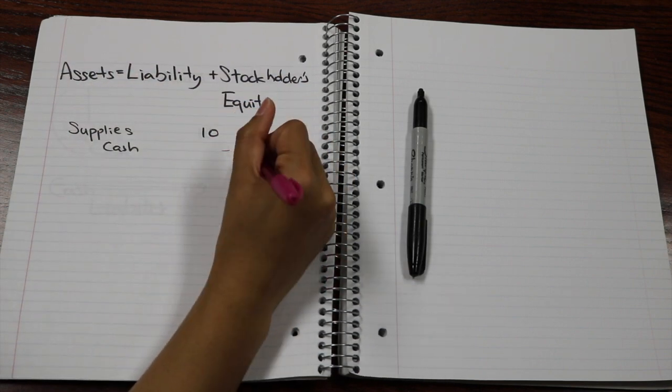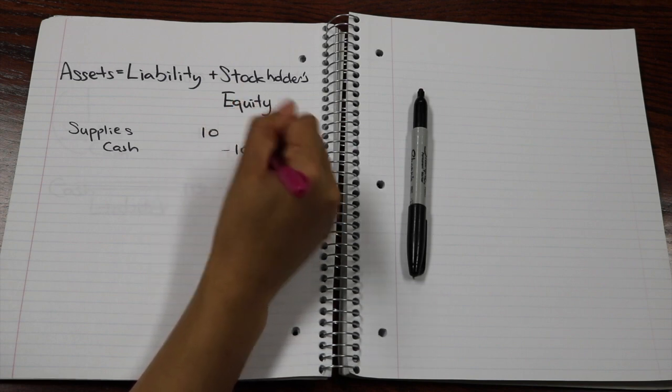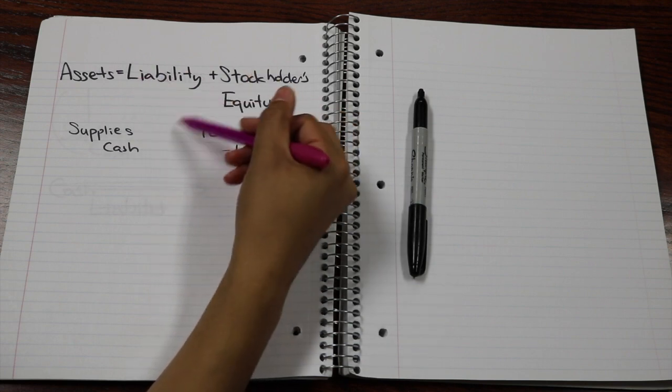I'm just going to write this here, but when you're doing your journal entries, you would not put a negative there. It's just showing that this is actually a negative on your asset, which is cash.